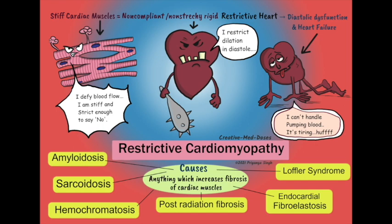Management: no specific treatment — treat the underlying disorder. For hemochromatosis, chelation may be considered; however, on exams, the answer is chronic phlebotomy (serial phlebotomy), not chelation. For sarcoidosis, glucocorticoids are used. Also, gentle diuresis for symptoms.